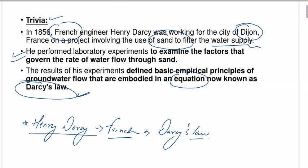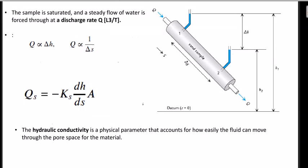Darcy's law is basically an equation that defines the principles of groundwater flow — the empirical or numerical principle of groundwater flow. This is what we are going to talk about in today's lecture.